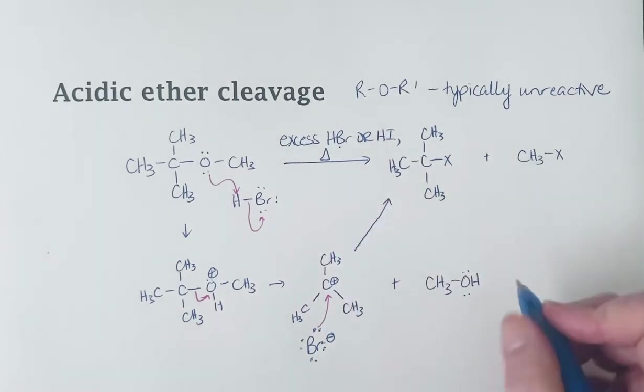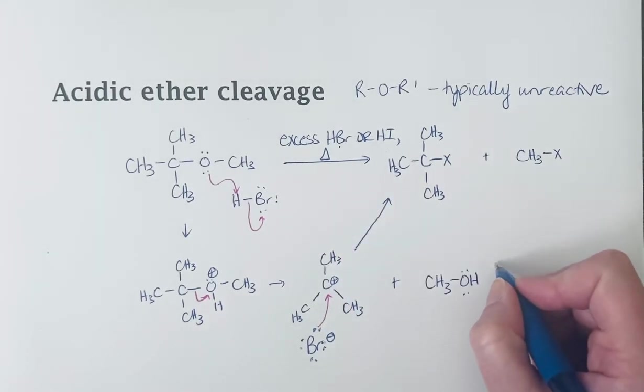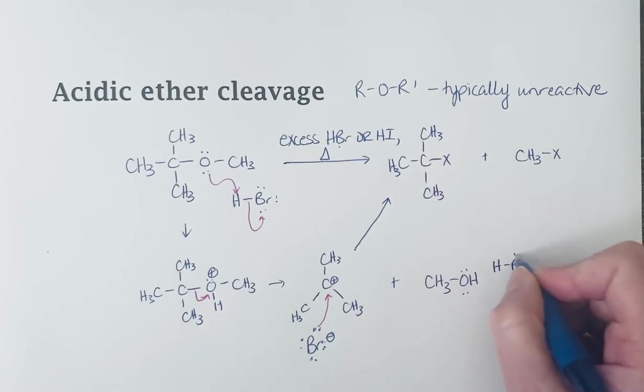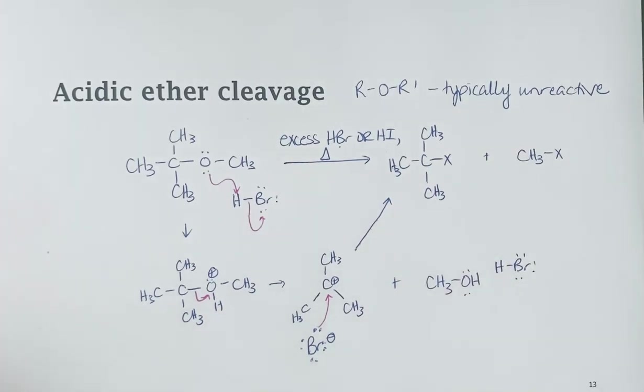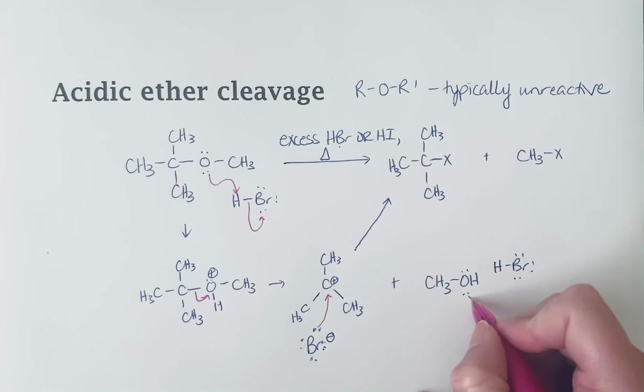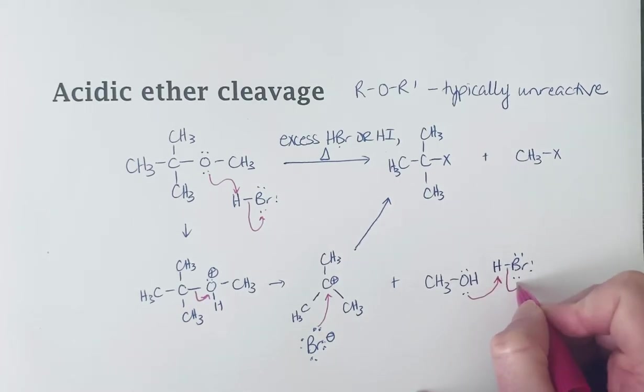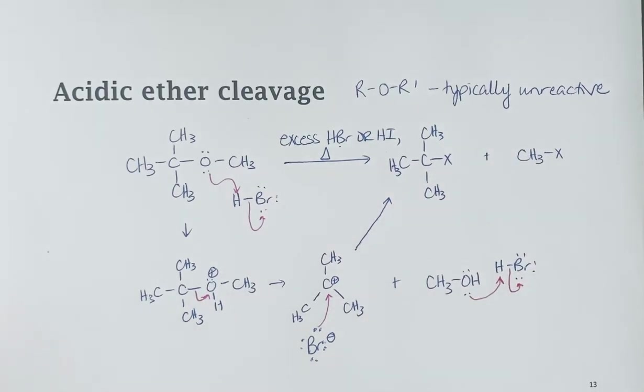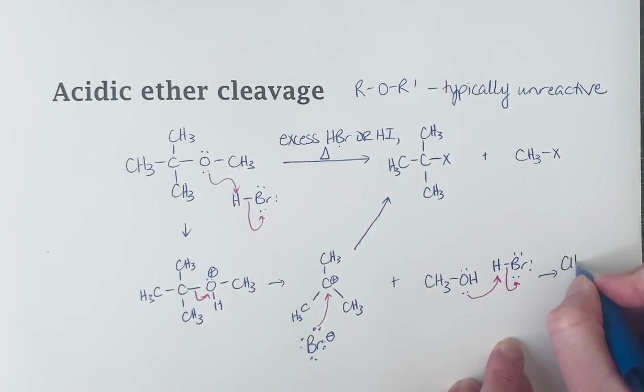We're only going to consider examples with excess. This can undergo its own reaction with some of that hydrobromic acid. So your alcohol can act as a base and pick up a proton, and we're going to make this into a good leaving group. So we've got this protonated alcohol as a good leaving group.